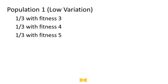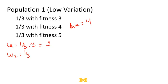Let's start with a population that has one third of people with fitness 3, one third with fitness 4, and one third with fitness 5. The average fitness here is 4. Using replicator dynamics, the weight on strategy 1 is one third times 3, which is 1. The weight on strategy 2 is one third times 4, which is 4/3. And the weight on strategy 3 is one third times 5, which is 5/3.